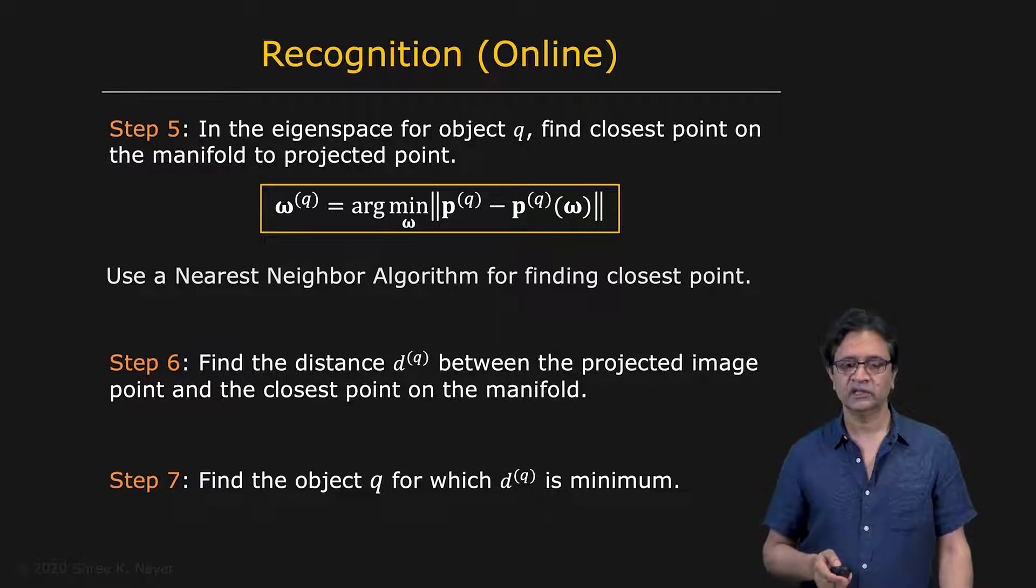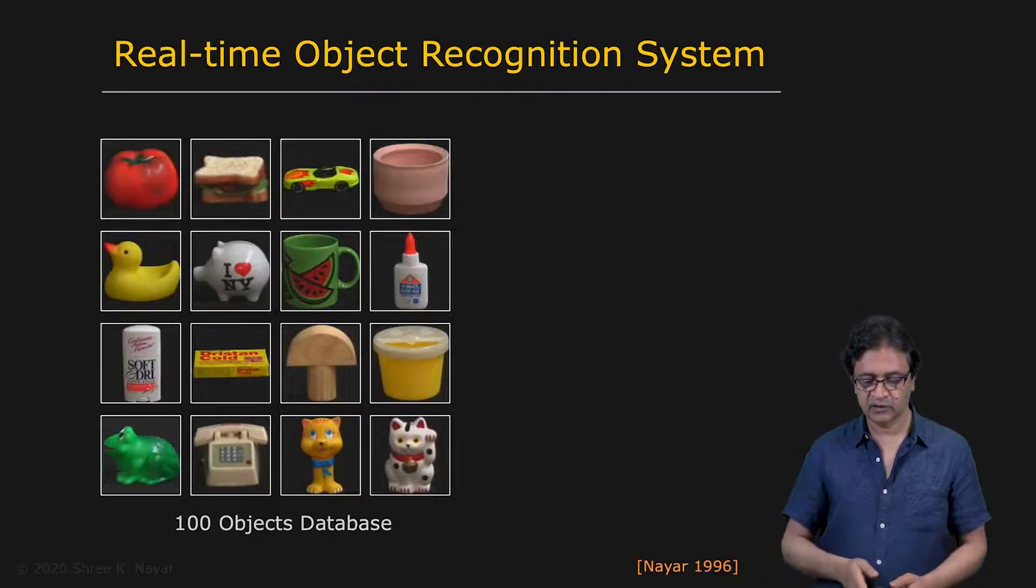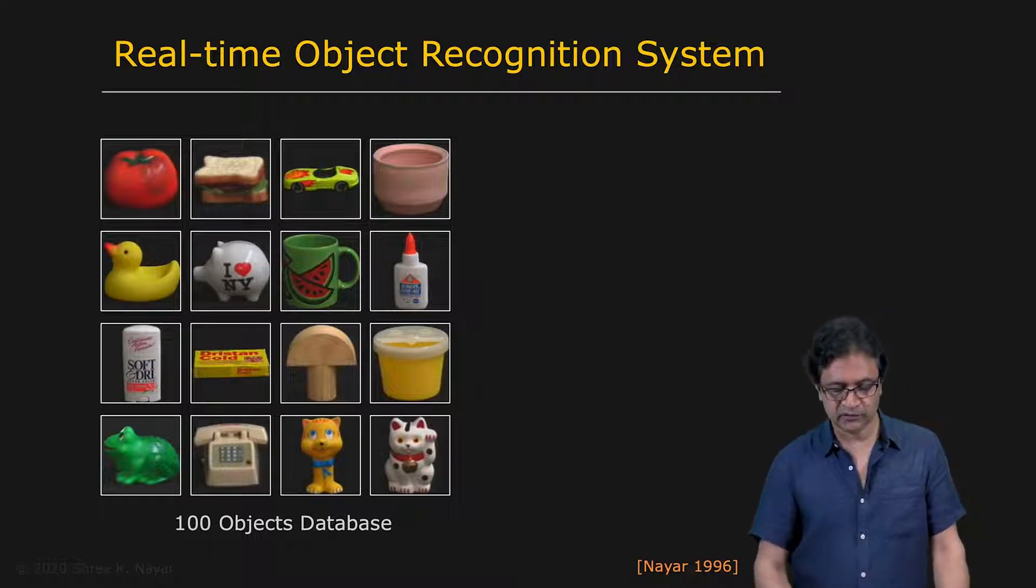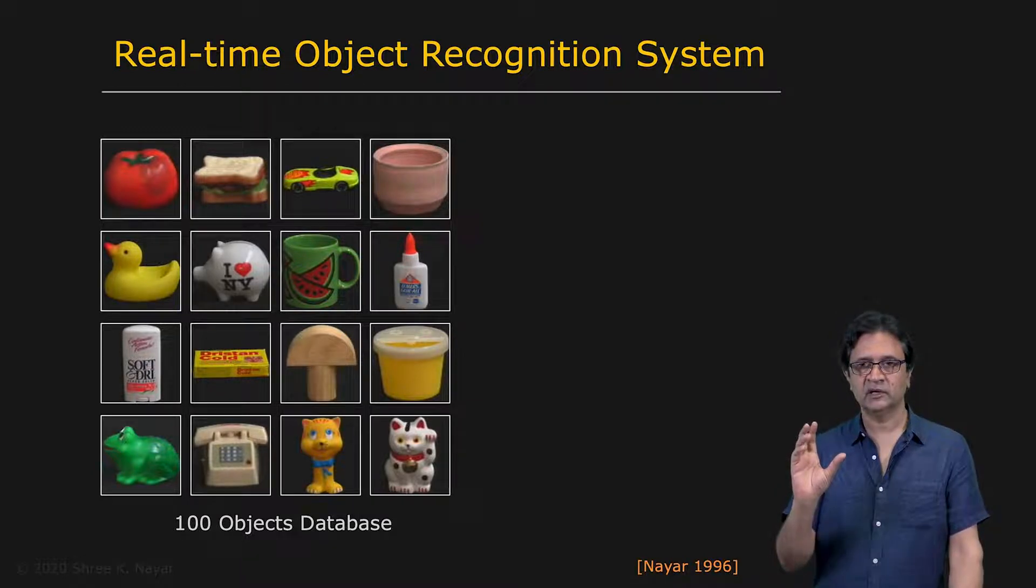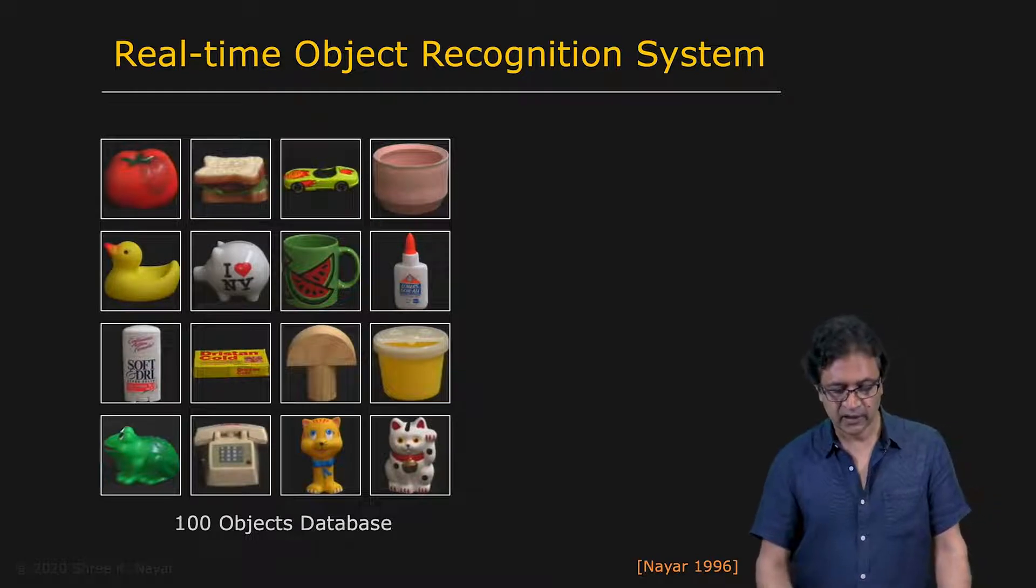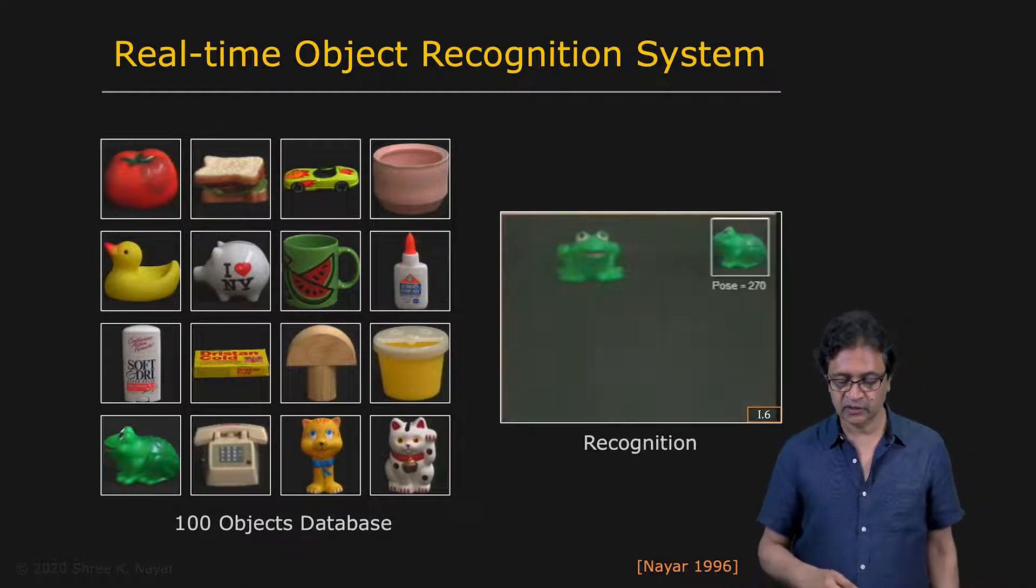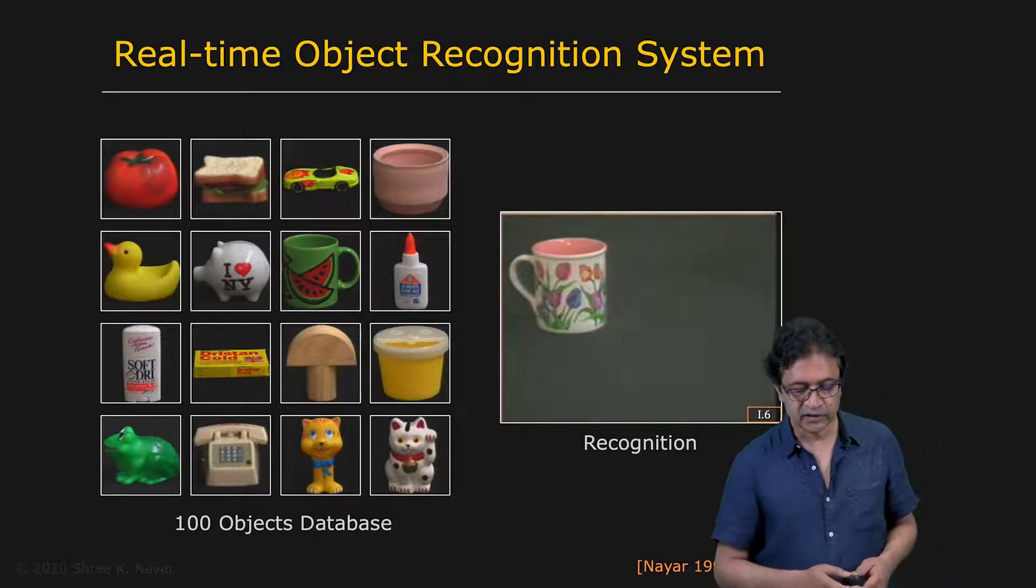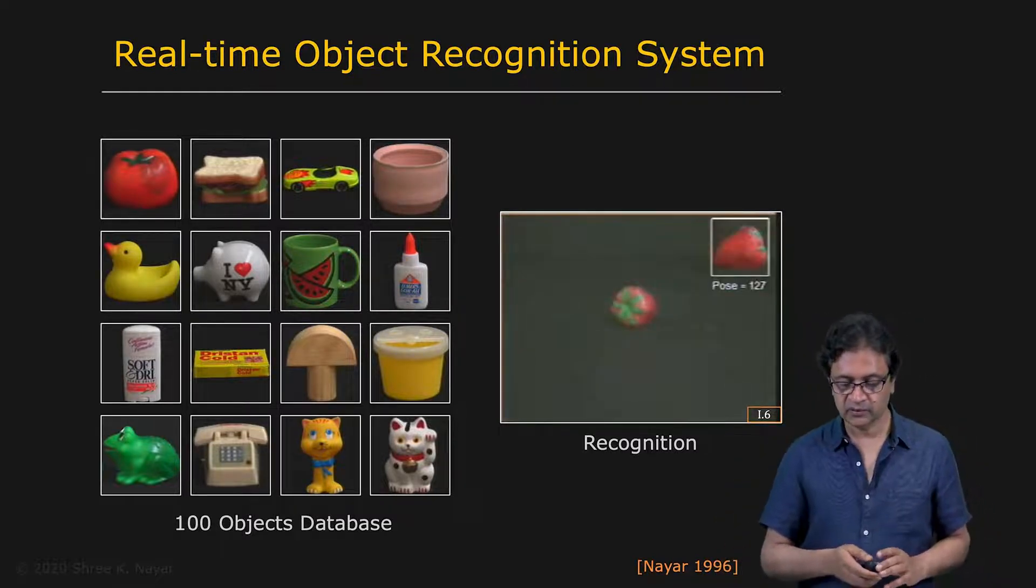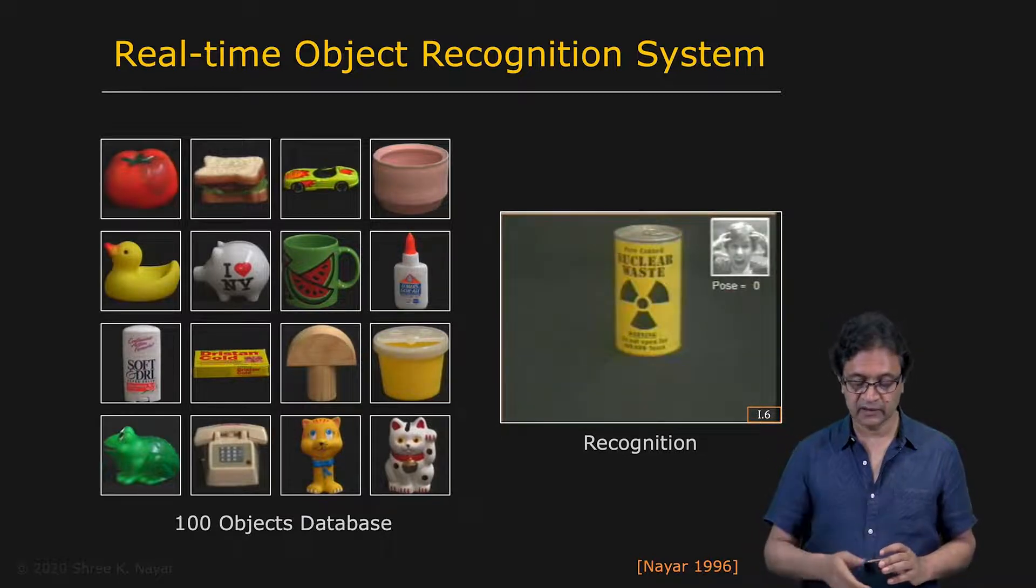Let's now take a look at a few examples, example applications. Here is a recognition system that was developed two and a half decades ago with 100 objects. In this case, a single variable was used, single parameter was used for the pose, which is about a single axis. And there was some illumination variations as well. So you see here objects are being introduced and shown to the recognition system. The object is successfully recognized and also the pose is estimated right here in terms of degrees. It's a very simple object recognition, but one that was state of the art back in 1996.